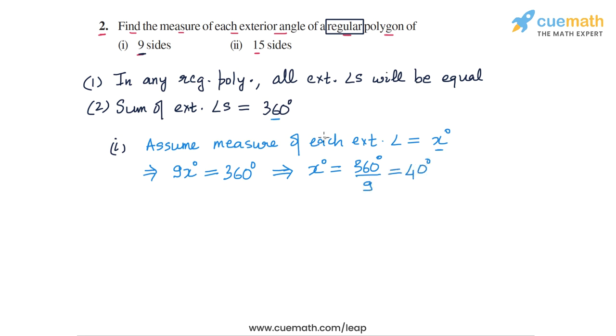So the answer for the first part is that the measure of each exterior angle of a 9-sided regular polygon is equal to 40 degrees.